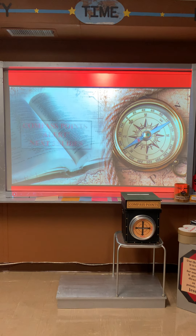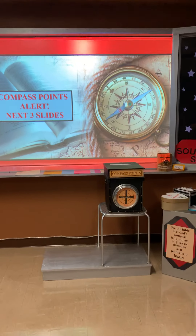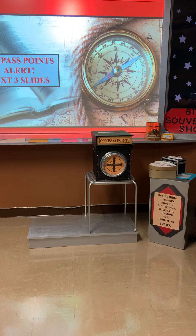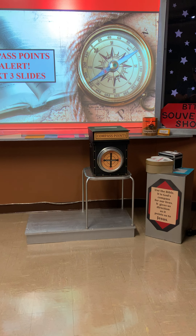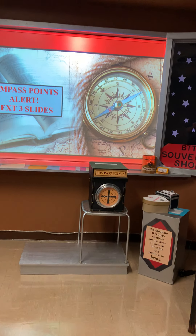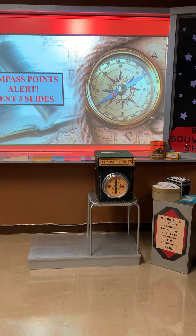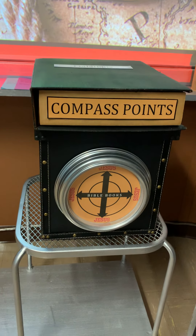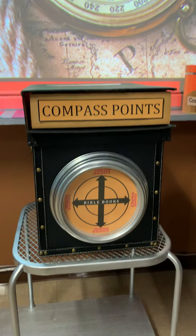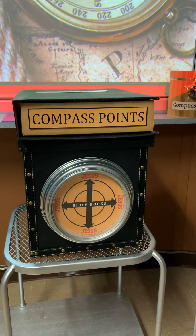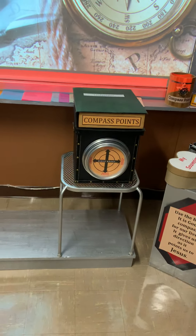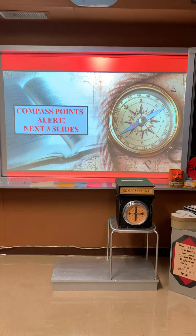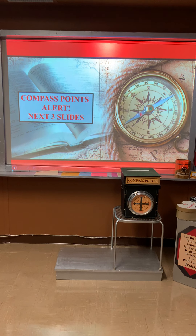For anyone watching who isn't familiar with our curriculum: in front of our screen — which is the window of our cockpit as we travel back in time — there's a big Bible on top of a box called Compass Points. The compass on that box represents every book of the Bible, and all four directions point to Jesus. When we see a compass point alert, the next slides give a clue about what's hidden inside that big Bible — something showing how Galatians points to Jesus.